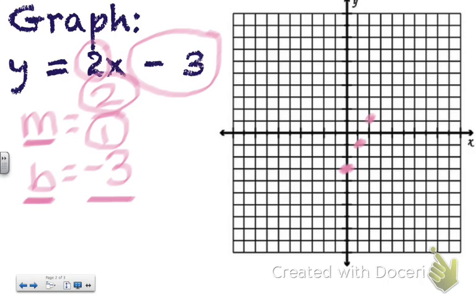Now to get points on the other side of my y-intercept, I'm going to do the reverse. I'm going to go down 2 and left 1. Down 2 and left 1.